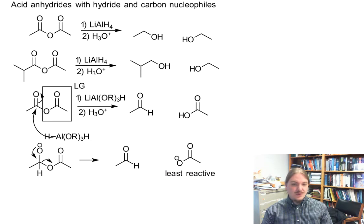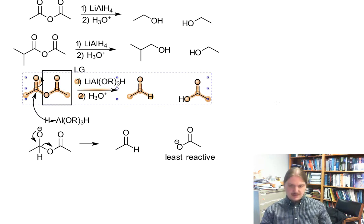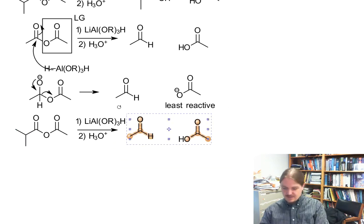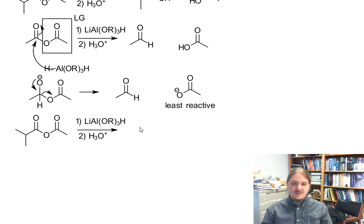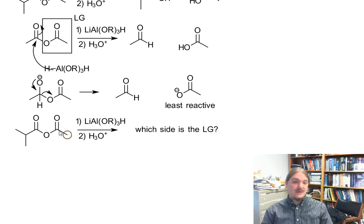Now, it's worth noting then that if we have a case where we have a non-symmetric anhydride, we end up with the sort of unhelpful case of which side is the leaving group. Because either one could be the leaving group and either one could become the aldehyde.